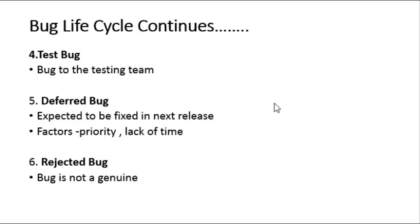Next, the status Test: once the developer fixes the bug, he transfers it to the testing team for the next round of testing. After fixing the bug and prior to releasing it back to the testing team, the state of the bug is changed to Test.